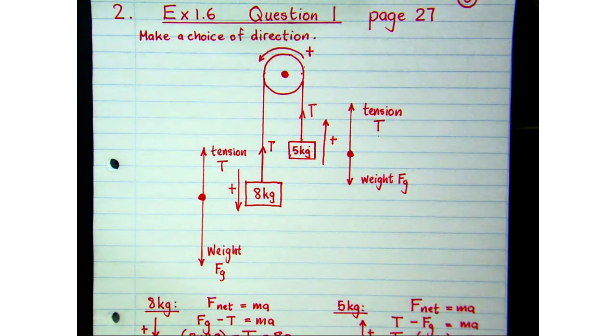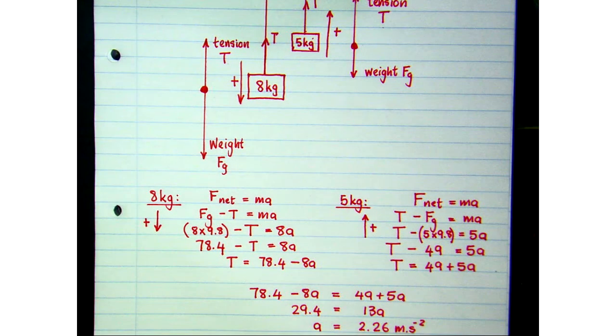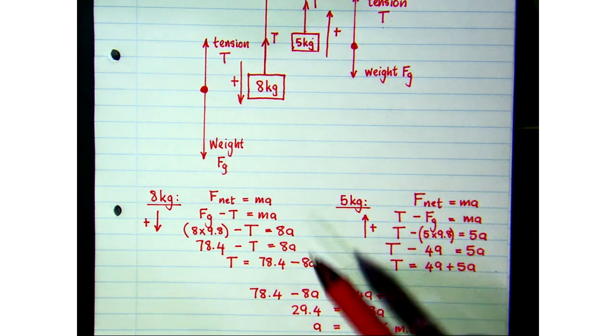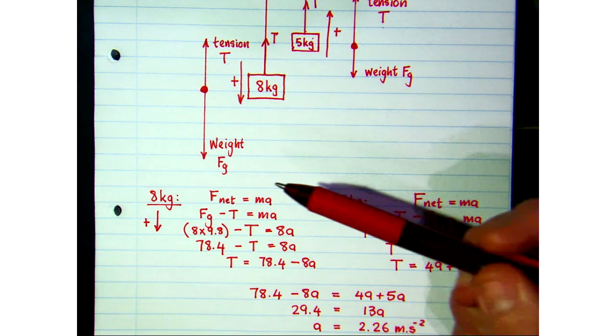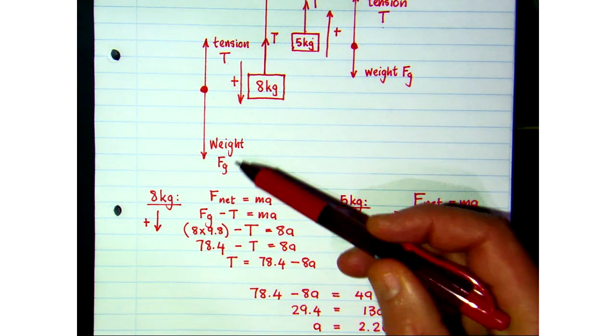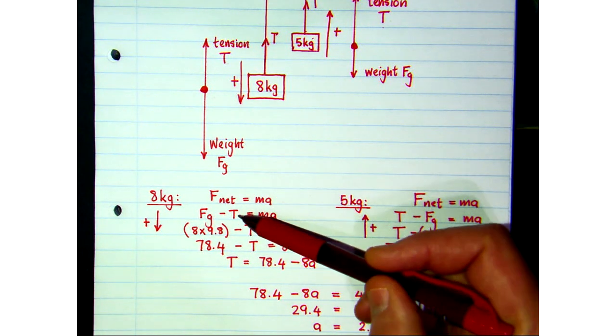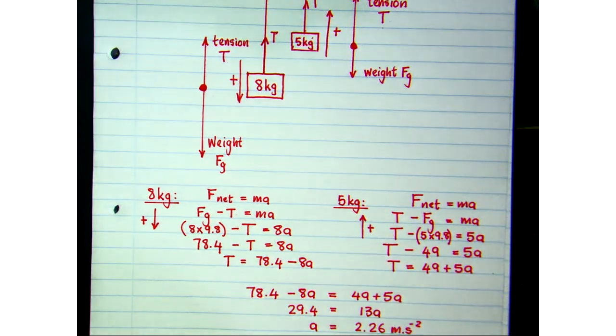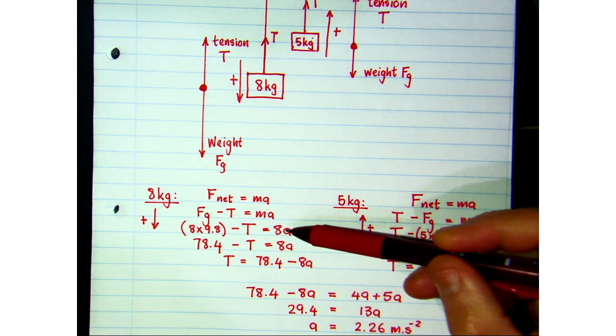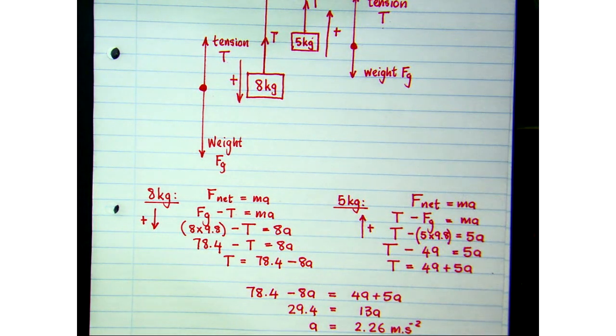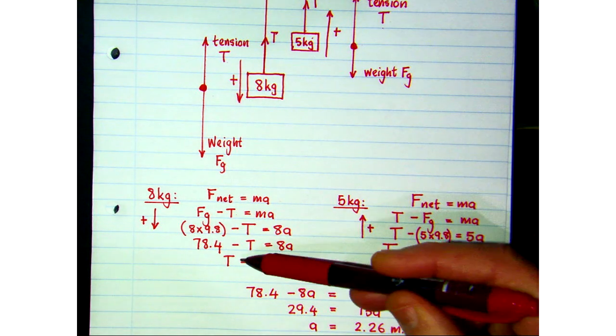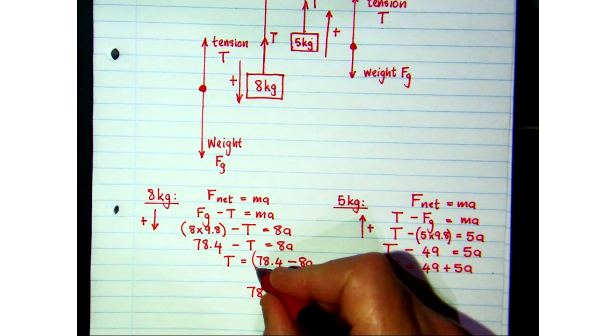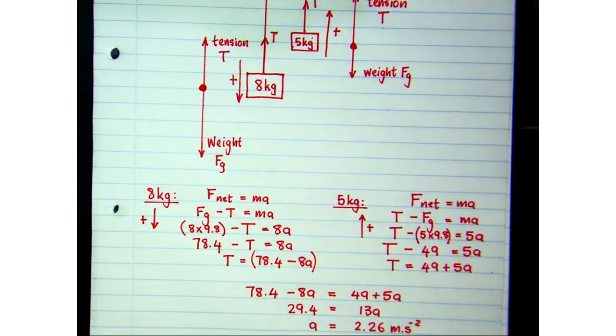So, to find the accelerations and tensions, we need to apply Newton's second law to each block. Well, for the 8 kg, it's the gravitational force minus the tension, because we're choosing down to be positive, and the mass is 8. And, if we substitute the mass and g in there, and we rearrange, we get an expression for the tension in the string.